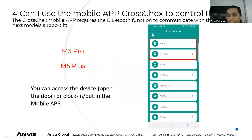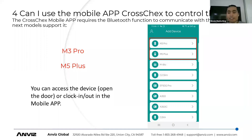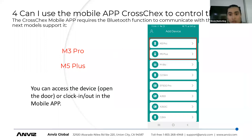Regarding our mobile application CrossCheck Mobile, the M5 Plus and M3 Pro are the two models that support it. This mobile application uses Bluetooth communication to connect to the device, allowing you to add or delete users, or manage time attendance from the mobile app. Let me do a short demo during the presentation to show how it works on the M5 Plus.